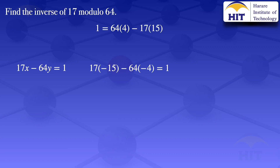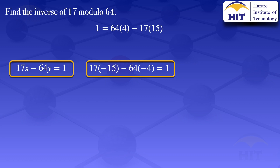We can now compare this equation with our target equation. These equations have the same form: 17 multiplies x, and the other has 17 multiplying minus 15; minus 64 multiplies y, and the other has minus 64 multiplying minus 4. Therefore, by comparison, x equals minus 15. But we want a positive solution, so we add M, which is 64. Adding 64 to minus 15, we get x equals 49.